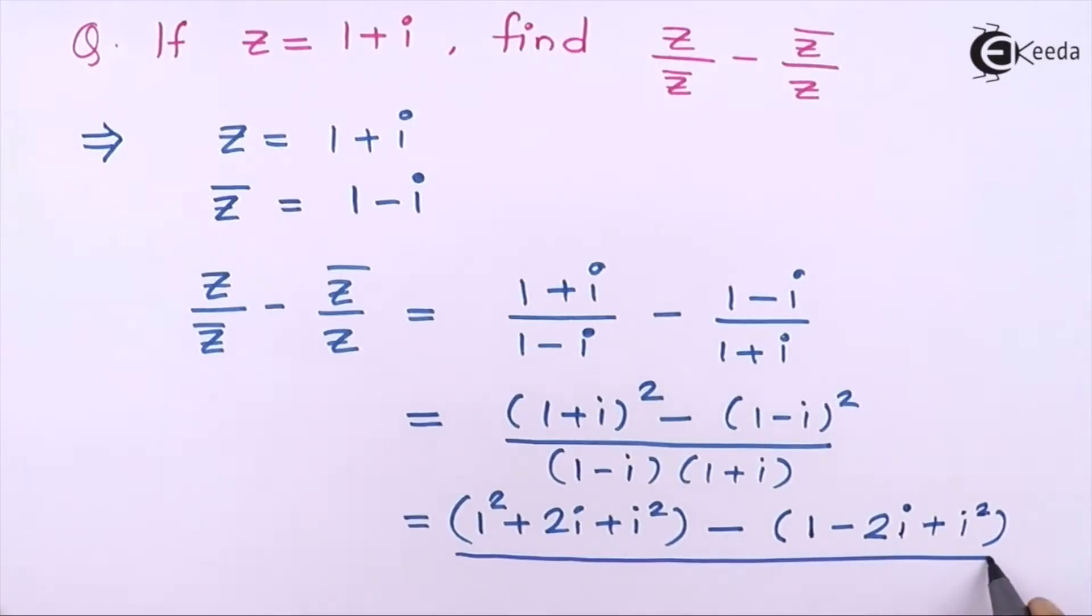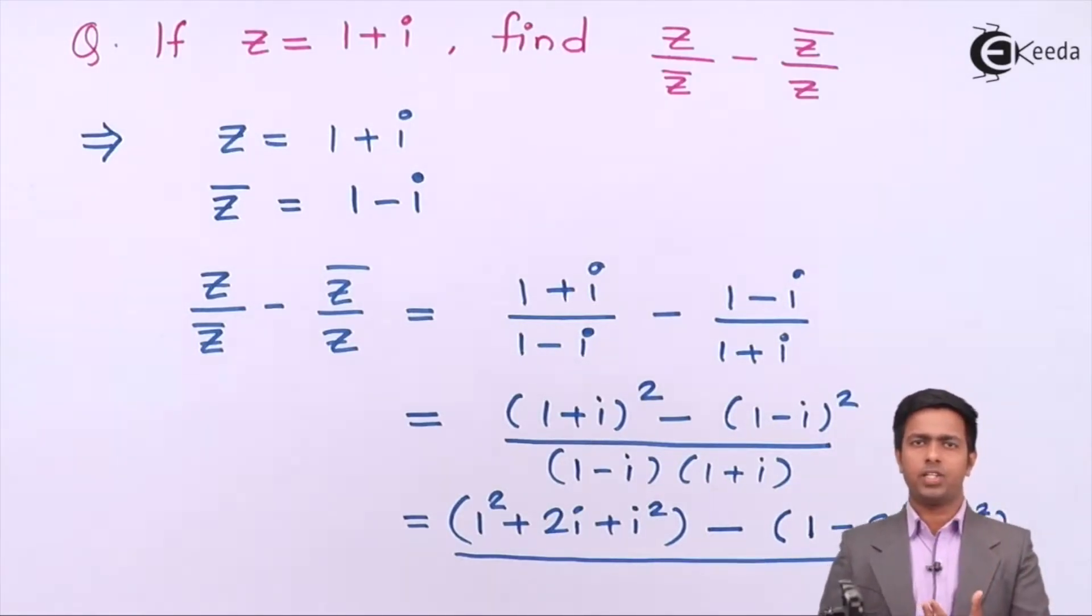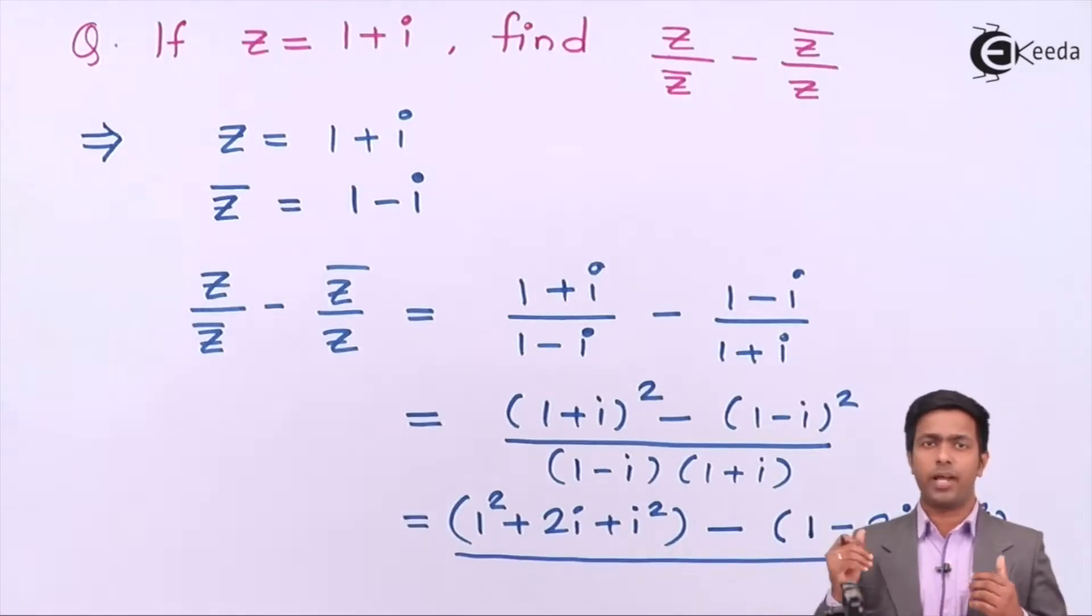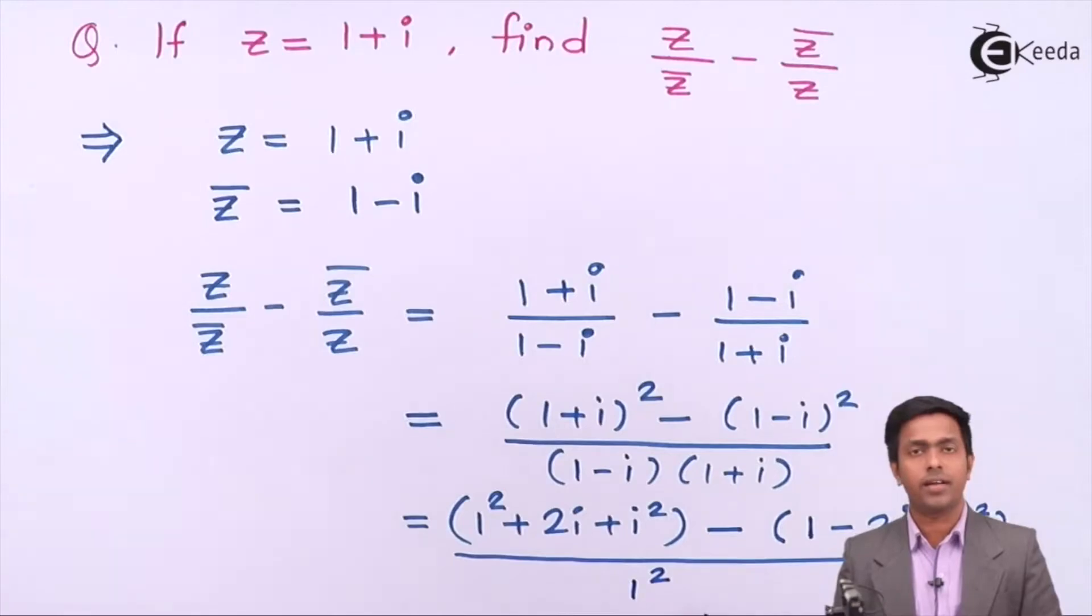Now in the denominator we have (1 minus i) into (1 plus i). It is by the formula of (a plus b) into (a minus b), which is equal to a² minus b². Here we will get 1² minus i².